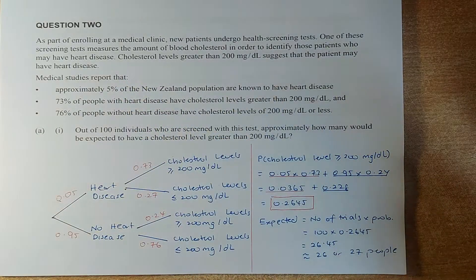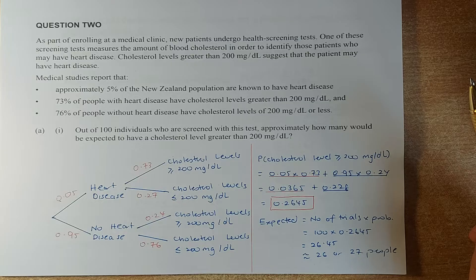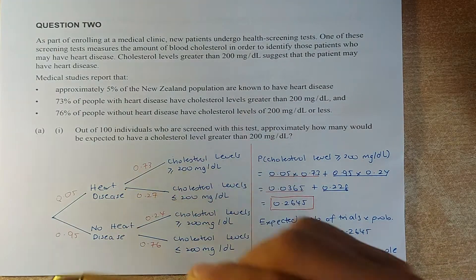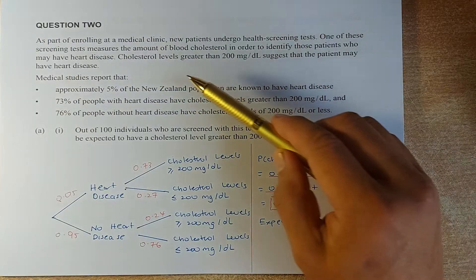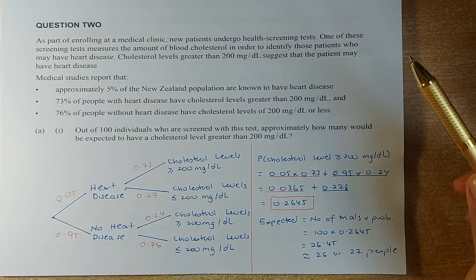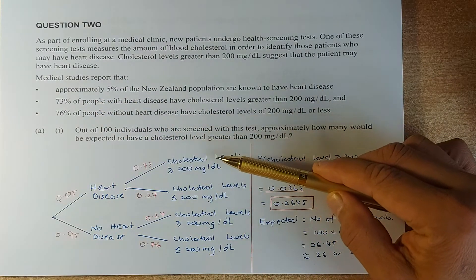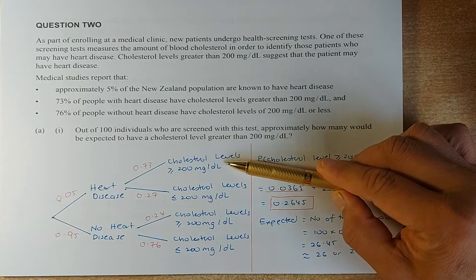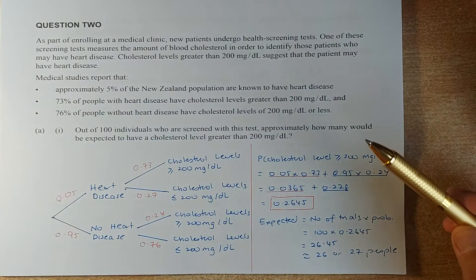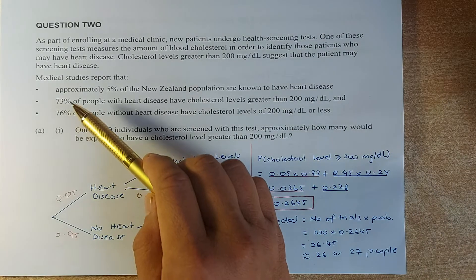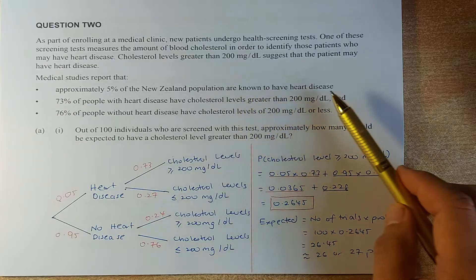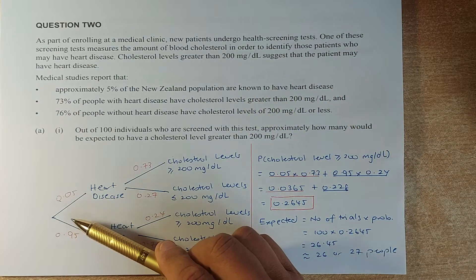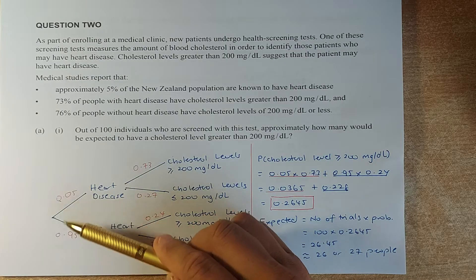So we shall read the question. As part of enrolling in a medical clinic, a new patient undergoes a health screening test. One of these measures the amount of blood cholesterol to identify whether the patient has heart disease or not. So the first event is heart disease versus no heart disease. Approximately 5% of the New Zealand population are known to have heart disease, so heart disease is 0.05 and not heart disease is 0.95.